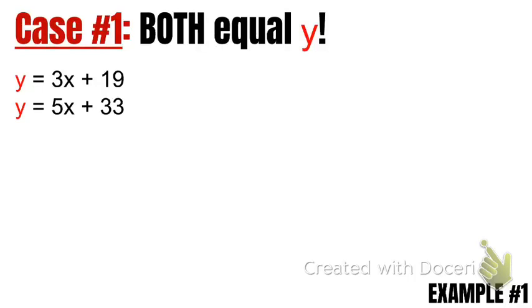We're going to talk about solving systems of equations, and this is the first type of scenario when we're presented with two equations that are both equal to y. So in this case, if y equals 3x plus 19, and it also equals 5x plus 33